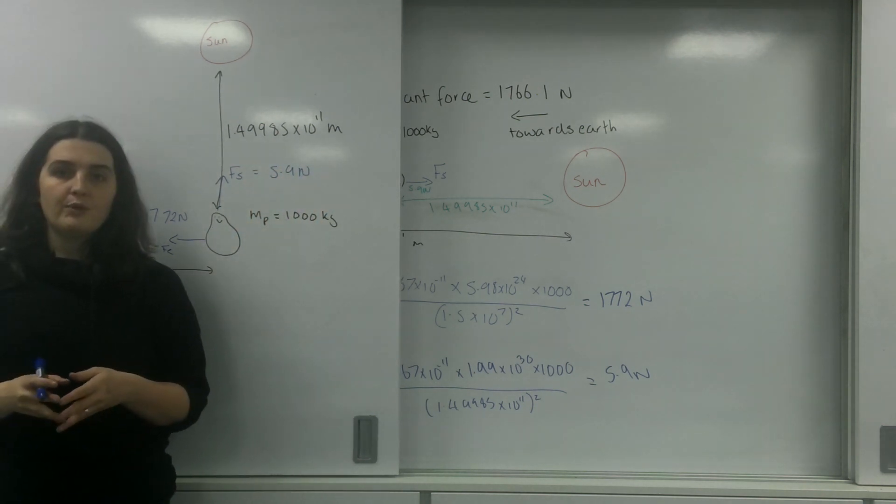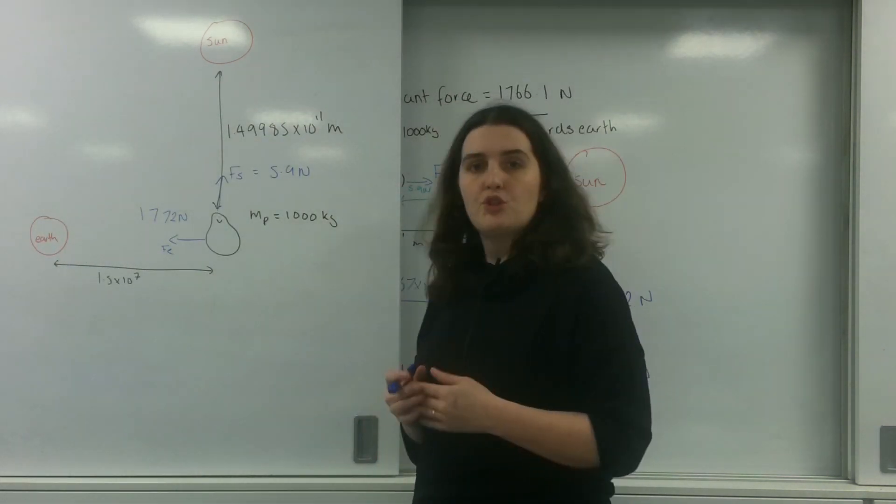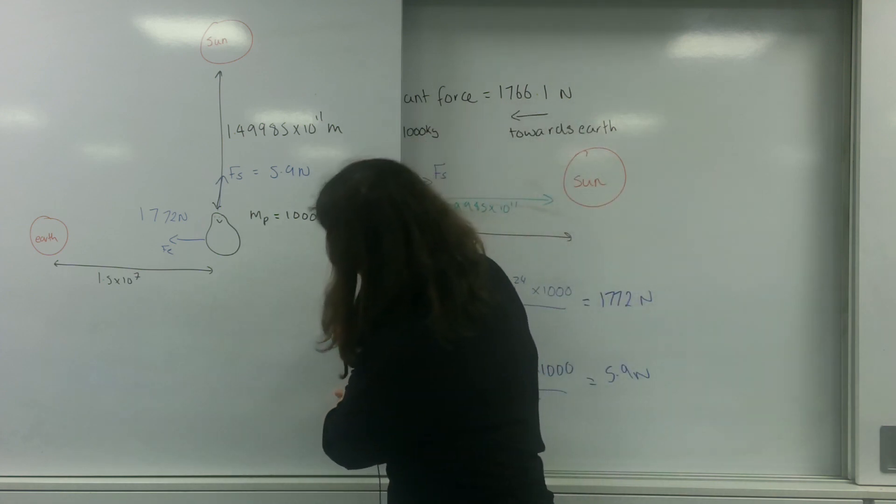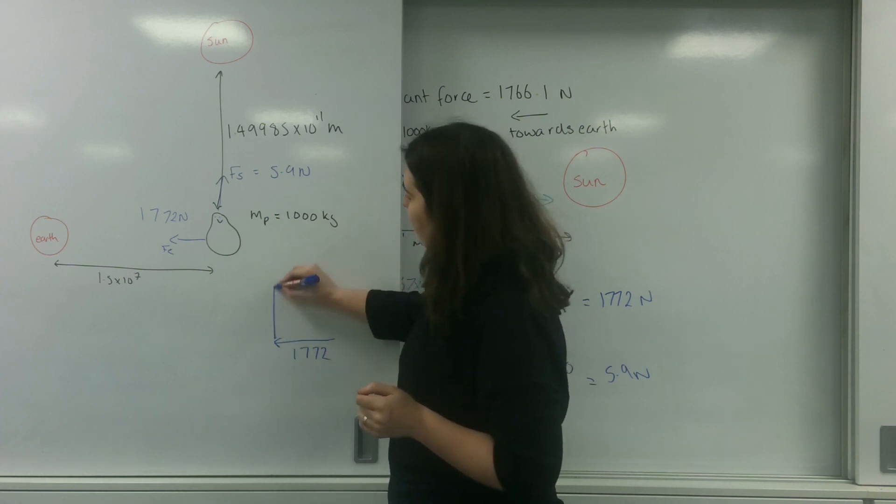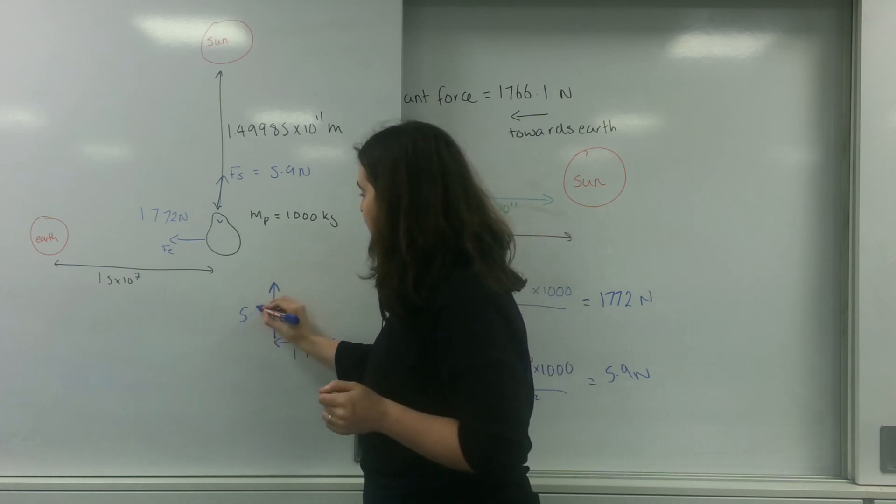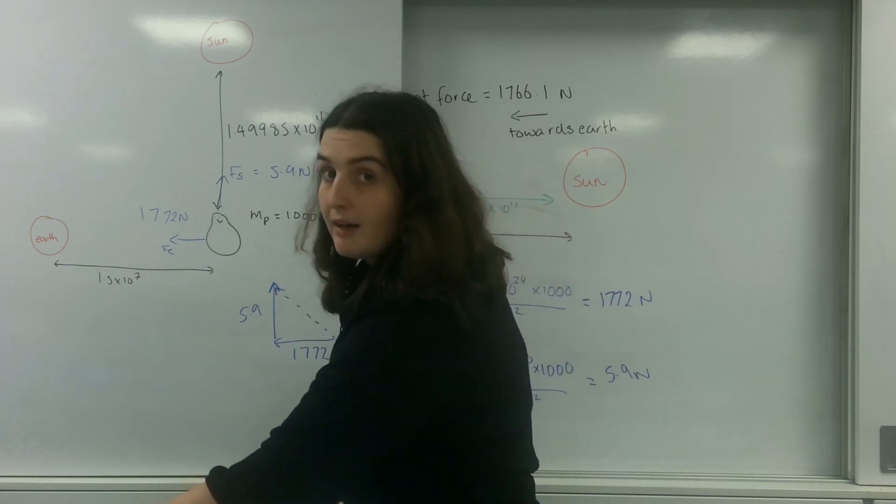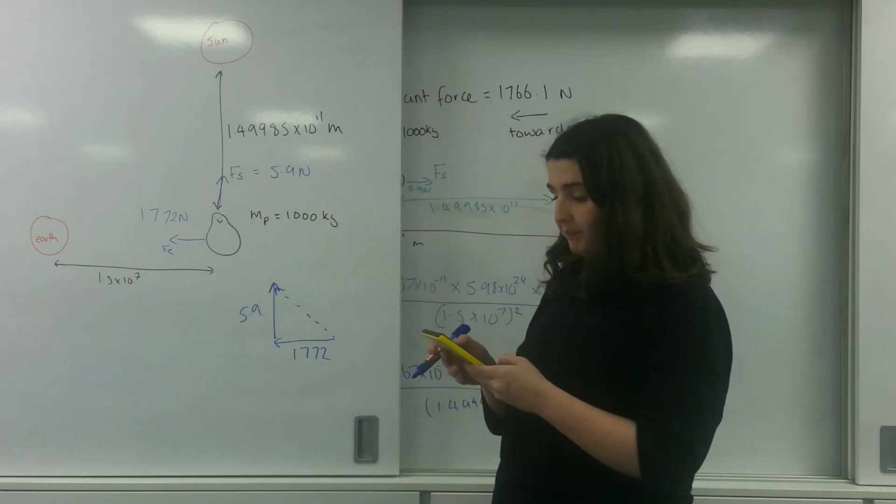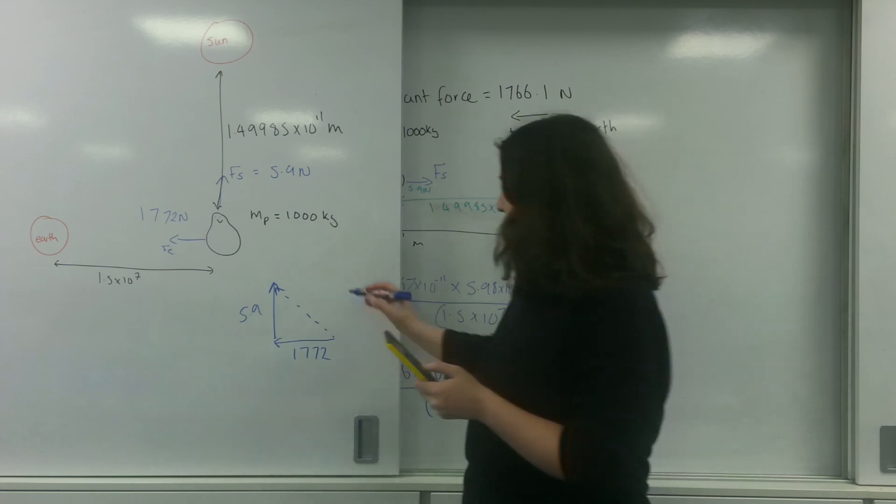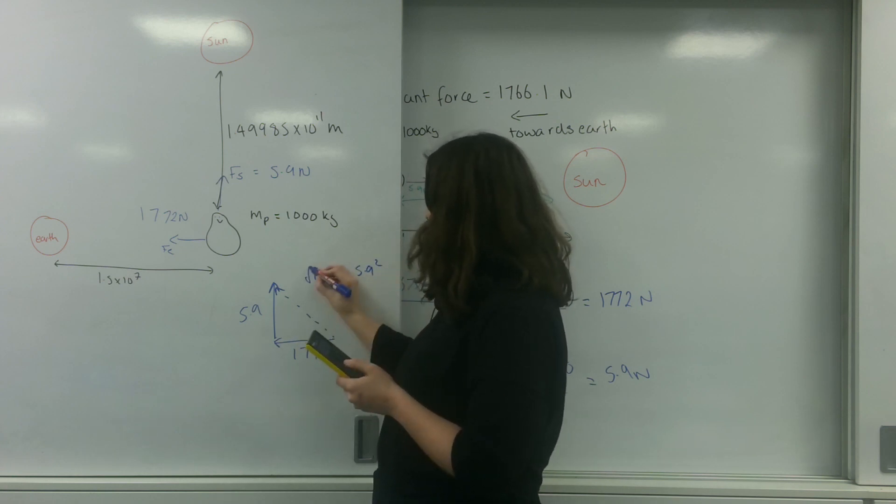Now how you do this if the forces are perpendicular to each other like this here is you just do a vector analysis. So I'm moving this way with 1772 newtons and I'm moving up by 5.9. This here would be my resultant direction. I'm going to calculate that using Pythagoras: 1772 squared plus 5.9 squared square rooted.